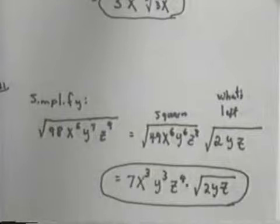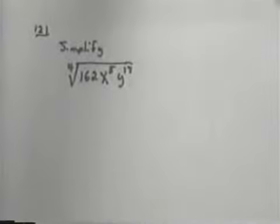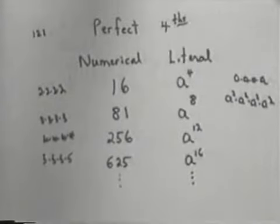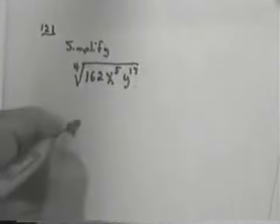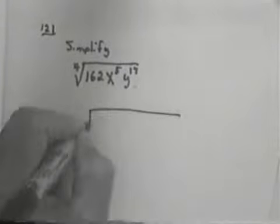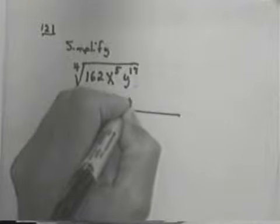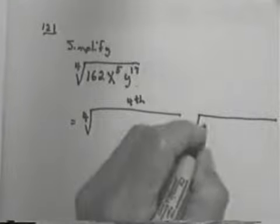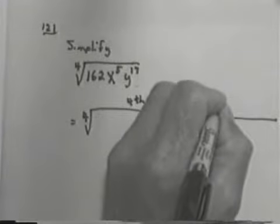Let me do one more before I give you some exercises. Let's simplify the 4th root of 162x to the 5th, y to the 17th. Well, in order to do that, I need to look at my perfect 4th. So, you need to pull out your table, perfect 4th. And you need to factor this into what is a 4th times what's left.